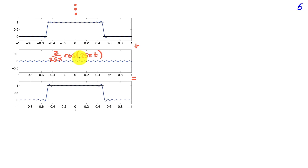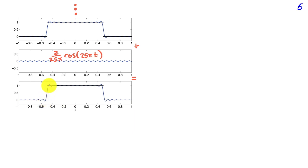Continuing this process, when we add in the term for k equals 25, which is 2 over 25 pi times cosine 25 pi t, we get closer and closer to a square wave. There are ripples near the boundaries, but we get a better and better approximation as we add more terms.